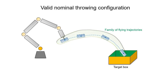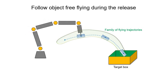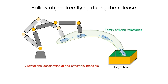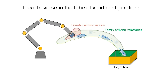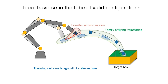Starting from a valid nominal throwing configuration, the simplest strategy to overcome release delay is to let the robot's end effector follow the free-flying dynamics of the object. However, due to hardware limits, such gravitational acceleration at the end effector is generally not feasible. Therefore, our idea is to let the robot's end effector traverse in the tube of valid throwing configurations during the release phase. As a result, the throwing outcome is agnostic to release time.